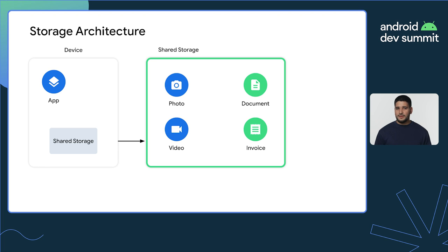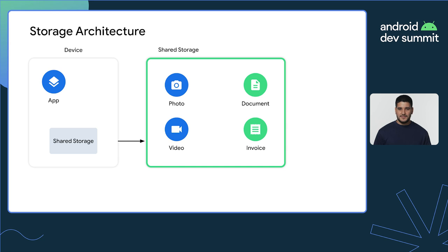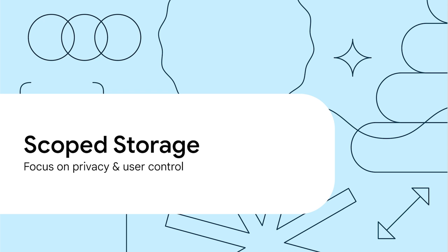These different types of storage locations can change on different Android versions. So if you're using file paths, don't save absolute path references to files, but instead keep relative references from the root of these different storage locations. Now we'll look into scoped storage.